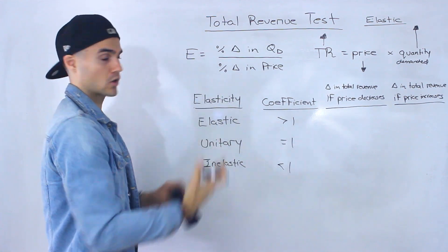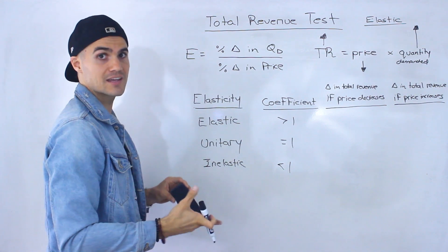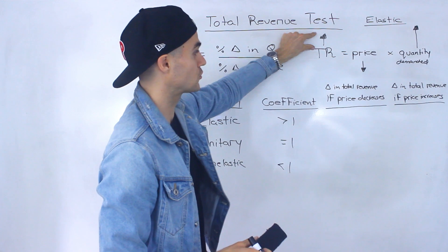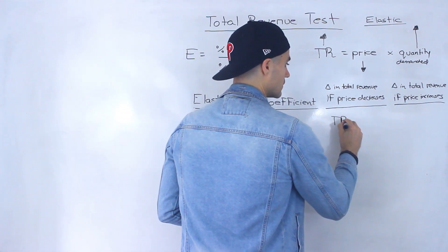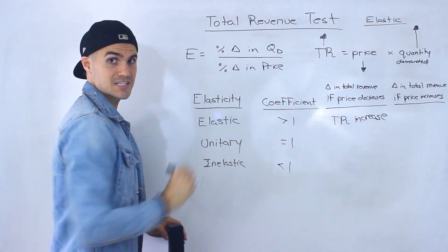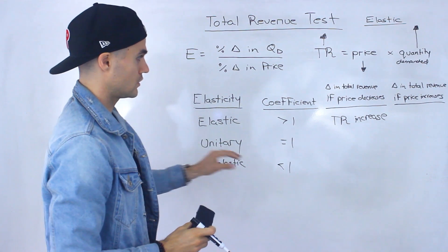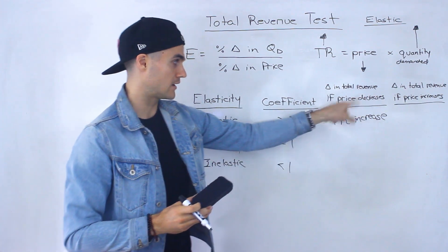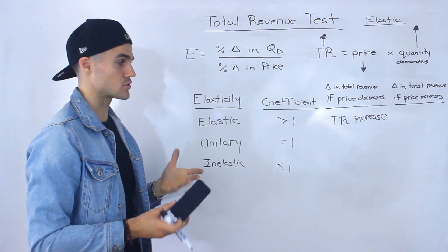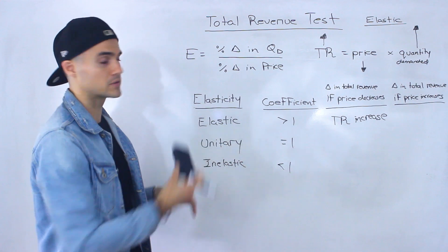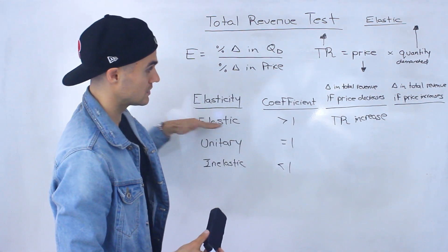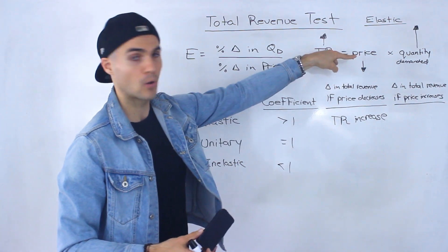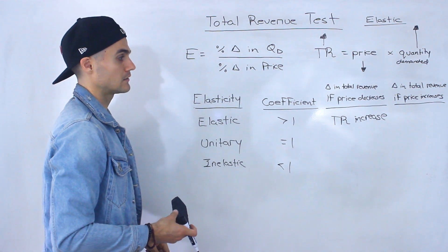The price went down by a certain percentage, but the quantity demanded went up by a larger percentage, so the net effect on total revenue is that it's going to increase. So if you get a question saying the price of a good decreased and the total revenue increased, you'll know right away that that good is elastic. For an elastic good, if the price decreases, the total revenue to the producer is going to increase — even though price went down, that quantity demanded goes up by a larger percentage.